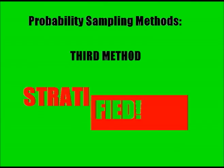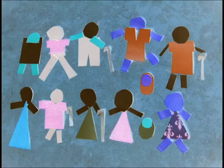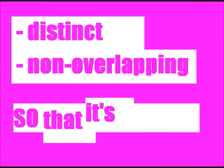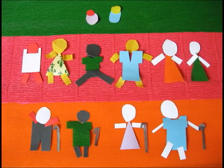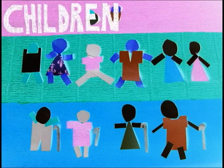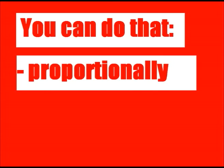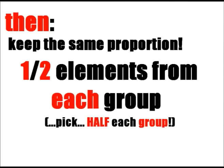Stratified! Divide your population into homogenous groups — distinct and non-overlapping — according to criteria such as age. In this case: children, adults, and older people. Then pick your sample from the groups with whatever method you think is good.